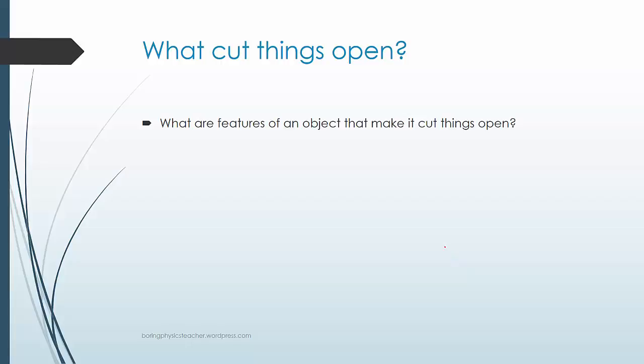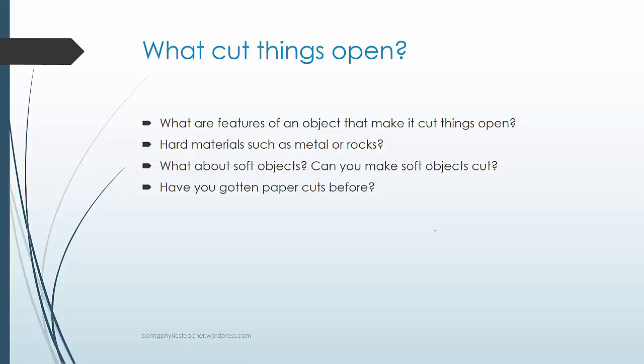What are the features of an object that cut things easily? Hard materials such as metal and rock, since knives are made out of metal. What about soft objects? Can you make soft objects cut through things?